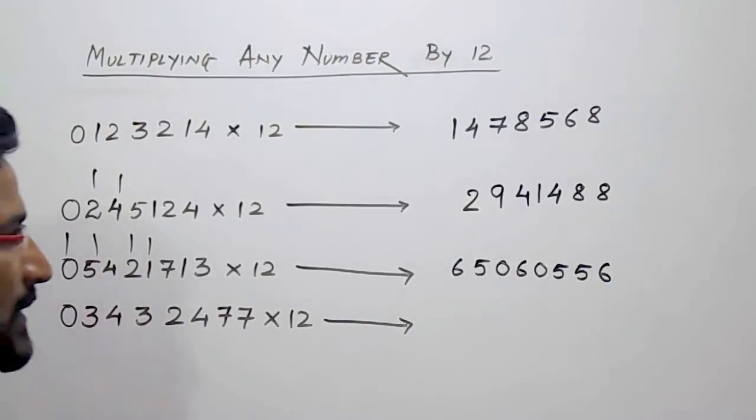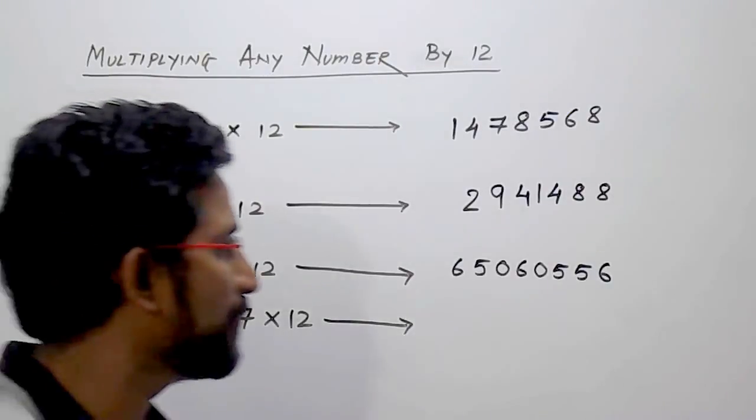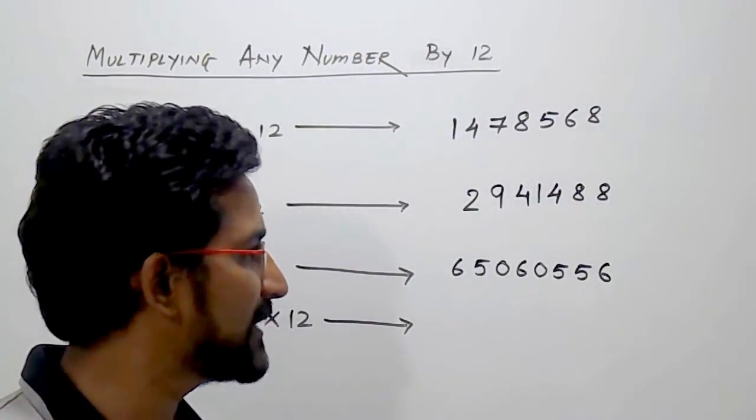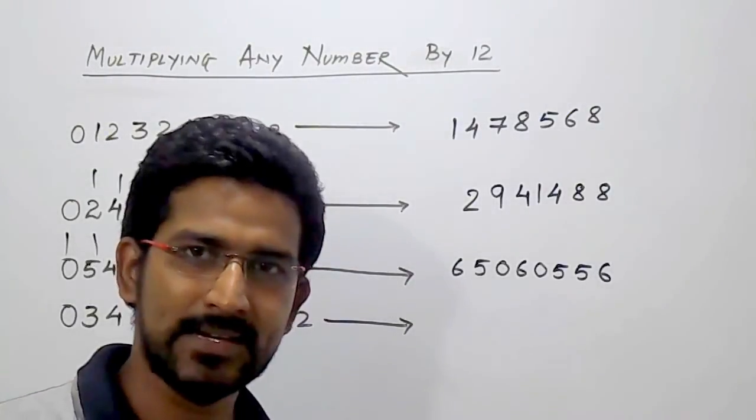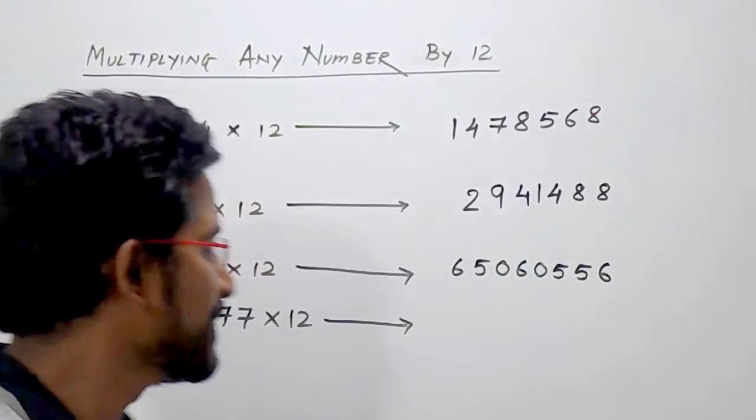So the answer will be 6, 5, 0, 6, 0, 5, 5, 6.